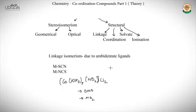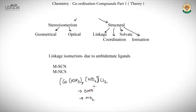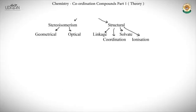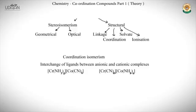Linkage isomerism is a class under structural isomerism that arises due to ambidentate ligands. Since the same ligand can donate from two different atoms — for example, SCN⁻ can donate through S or through N — the metal can be bonded to S in one isomer and to N in another. Similarly, NO2⁻ can give nitrito-N or nitrito-O isomers.